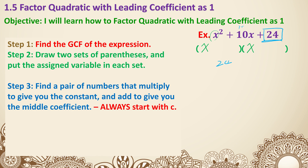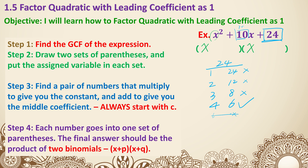Let's break down 24. I put the factor pairs in order: 1 and 24, 2 and 12, 3 and 8, 4 and 6. If you keep going, 6 and 4 is already repeating, so we stop. Now check which pair adds to the middle coefficient of 10: 1 plus 24 is 25 — no. 2 plus 12 is 14 — no. 3 plus 8 is 11 — no. 4 plus 6 is 10 — yes! So the answer is x plus 4 times x plus 6. The more you practice, the faster you'll recognize these number combinations.